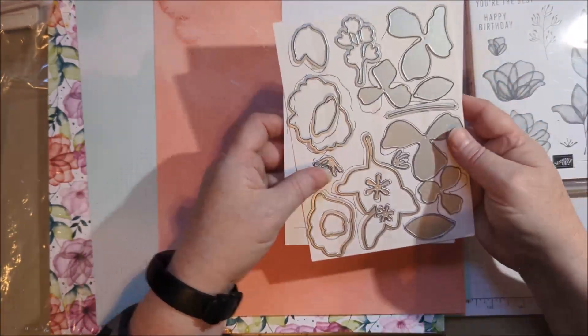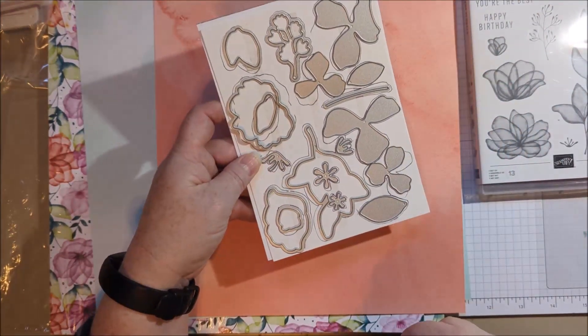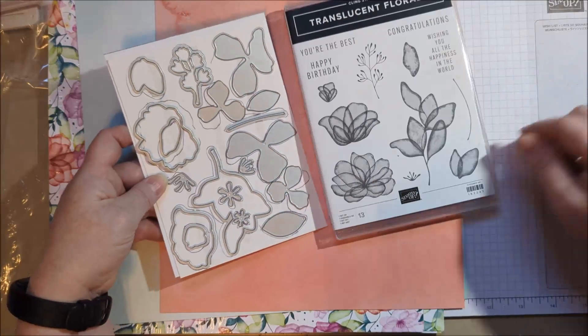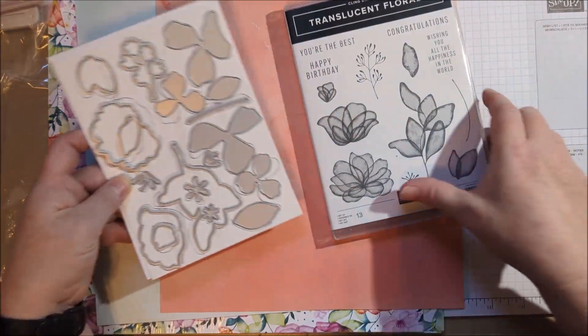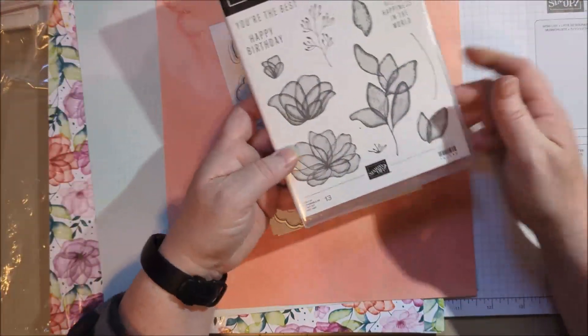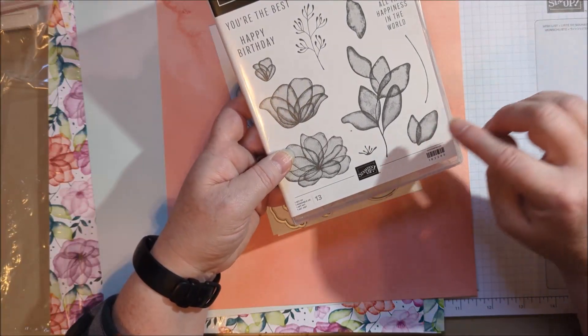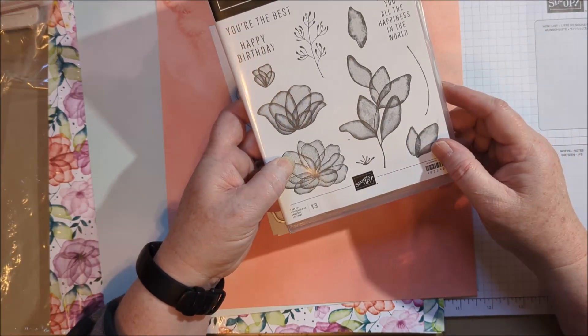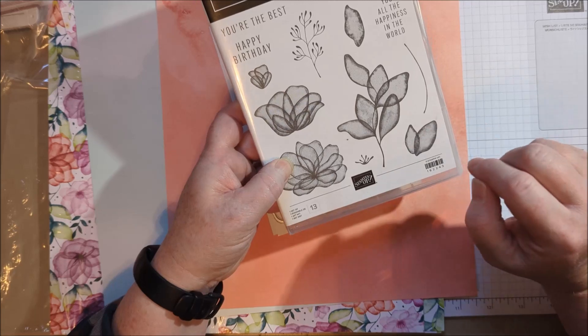So anyway, this is the die set. This is the stamp set. You've got some great sentiments here. This is what we call distinctive stamps. And so it looks confusing.